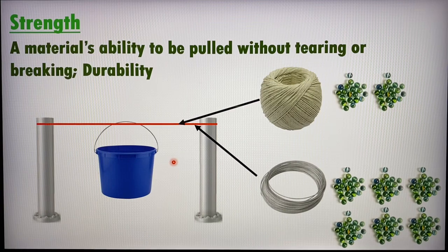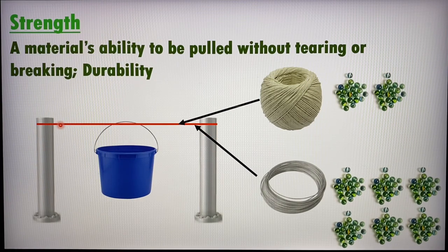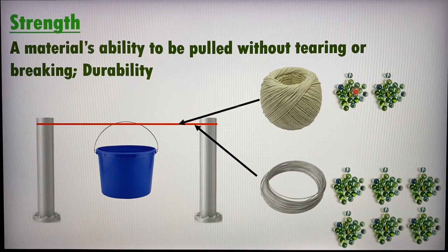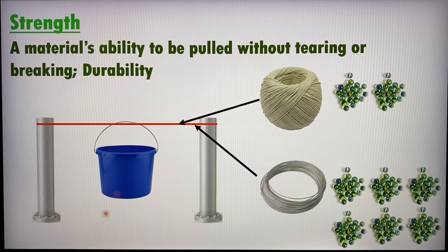How do we test each property of a material? For strength — the material's ability to be used without tearing or breaking, also called durability — here is a simple experiment: set up the poles and a pail, and use the material you want to test. Add marbles one by one. The number of marbles it takes to break the material indicates how strong the material is. A metal rope will be much stronger, able to hold more marbles than a cotton rope before it breaks.